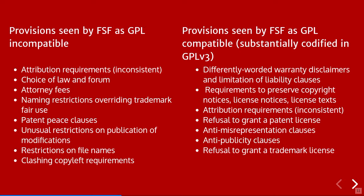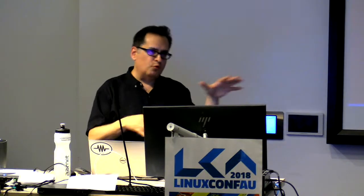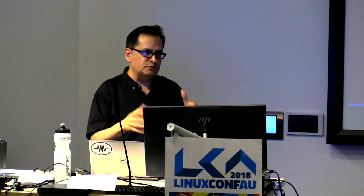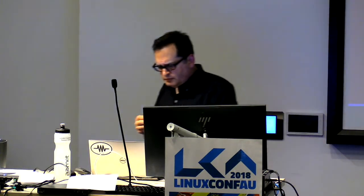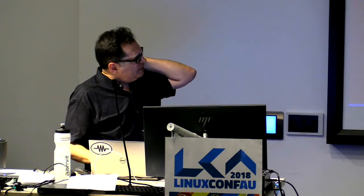Choice of law clauses are very common in commercial proprietary license agreements — they give interpretive guidance to apply the law of a given country to simplify legal issues. The FSF's view was that this is potentially dangerous because you could select the law of a country hostile to free software. I think that's actually unrealistic, because I don't think there are really countries that are particularly more hostile to free software in their copyright law than others.